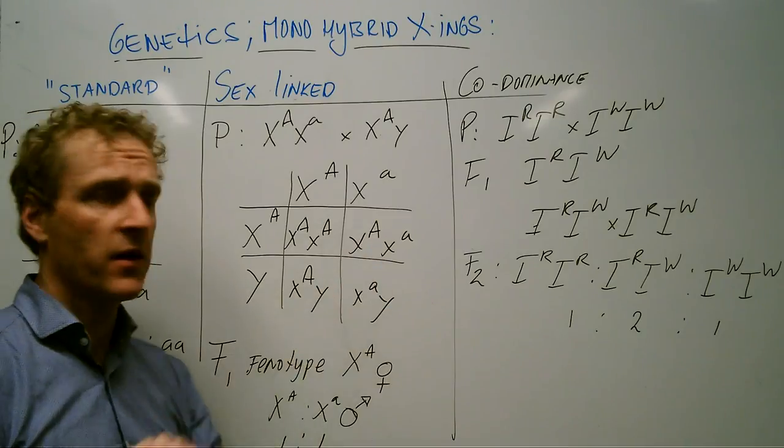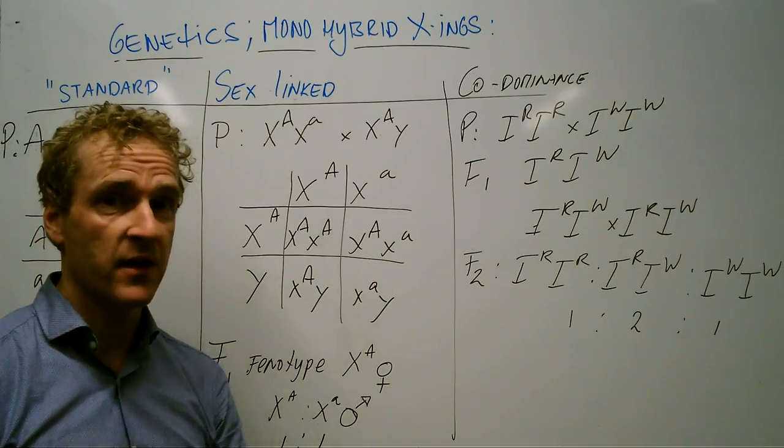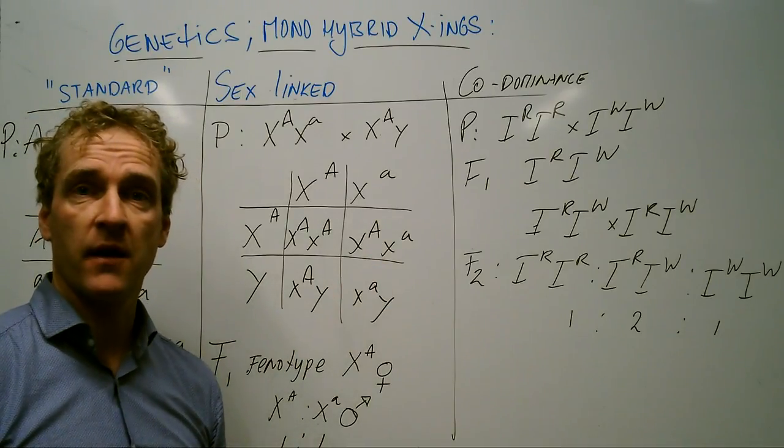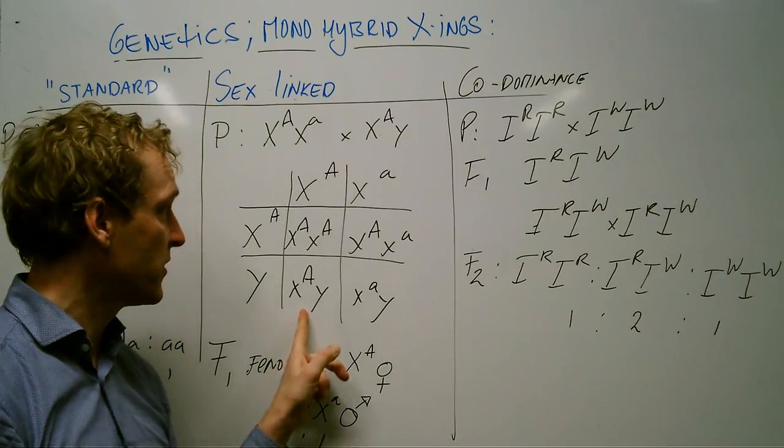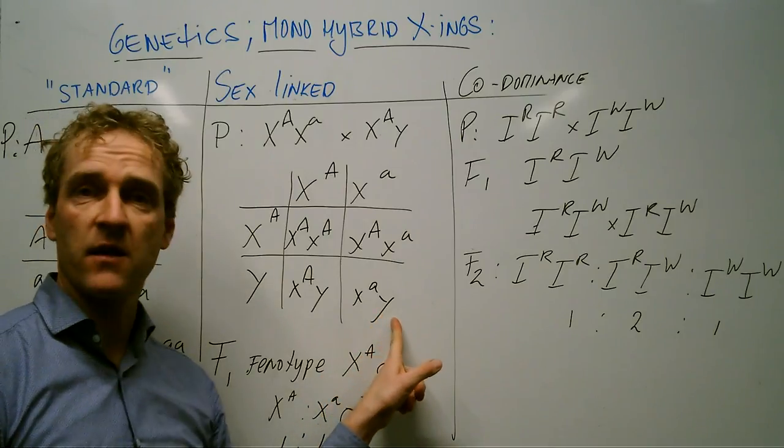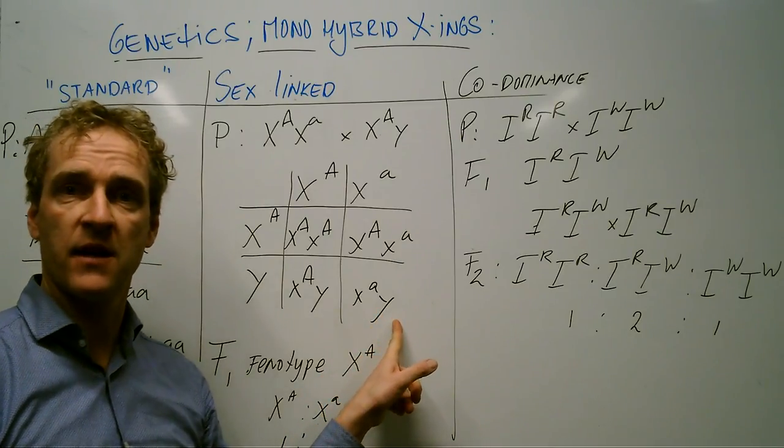We have a girl that can see color but is like her mother, is a carrier. We can see a guy that sees color. No problem there. Same as his dad. And we can see a colorblind guy here. He cannot see color.